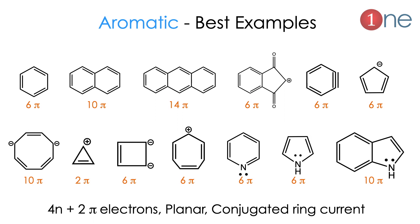Here I have given a complete example of the aromatic system — you can pause the video and see. The number of pi electrons is important: it should have 2, 6, 10, or 14 pi electrons, that is 4n+2 pi electrons. Additionally, it should have planarity as well as a conjugated ring current. Examples include benzene, naphthalene, anthracene, and more complex systems like pyridine, pyrrole, and indole. It can also be a dication or dianion — in that case you should count all electrons participating in the system. You can calculate yourself to understand it better.